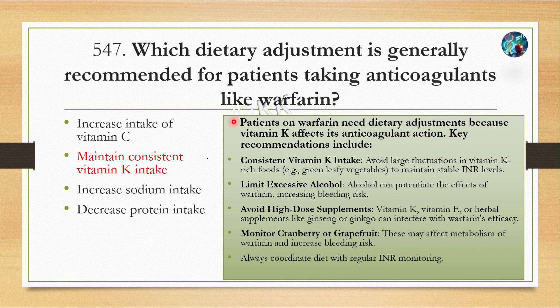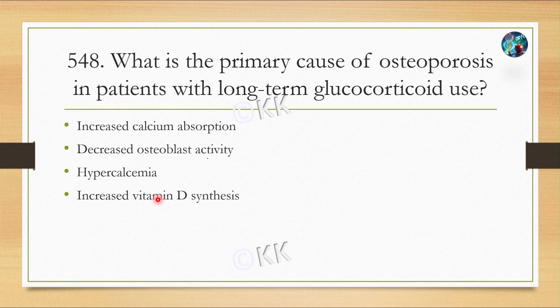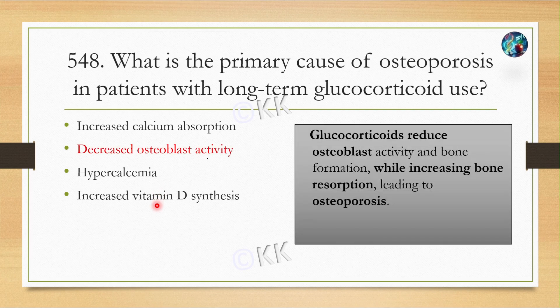Next question: what is the primary cause of osteoporosis in patients with long-term glucocorticoid use? Option A: increased calcium absorption. Option B: decreased osteoblast activity. Option C: hypercalcemia. Option D: increased vitamin D synthesis. The correct answer is Option B — decreased osteoblast activity. Glucocorticoids reduce osteoblast activity and bone formation while increasing bone resorption, leading to osteoporosis.